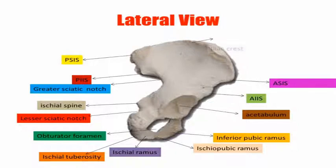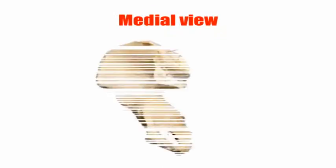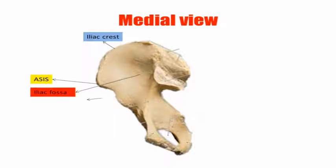Now we will learn about the medial view of the hip bone. This is the iliac crest, as we studied in the last slide. This is the anterior superior iliac spine. This is the iliac fossa, which is not visible in the previous lateral view.